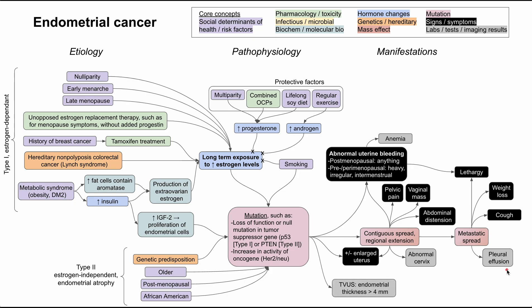A quick note on diagnosis: when there is uterine bleeding in a postmenopausal woman, the first test is usually a transvaginal ultrasound, looking at the endometrial thickness — the inner layer of the uterus. If it is larger than four millimeters, that is concerning, and the next step is usually a biopsy. On biopsy, you might see endometrial hyperplasia with atypia, which is concerning, and sometimes concomitant adenocarcinoma.